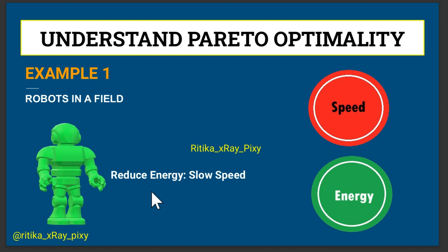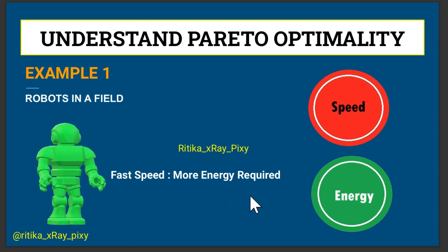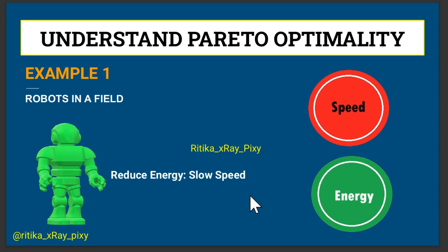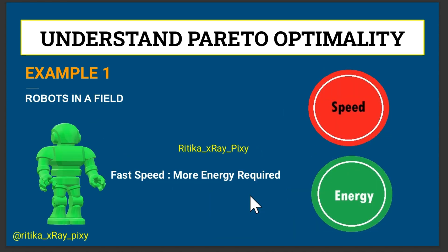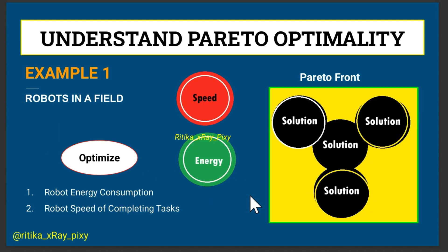If you decrease the speed, it will take more time but use less energy. So here we cannot improve one aspect without sacrificing the other. In such a situation, there is not just one Pareto optimal solution, but a set of solutions called the Pareto front — any point on this front represents a trade-off between the objectives where no one objective can be improved without worsening another.